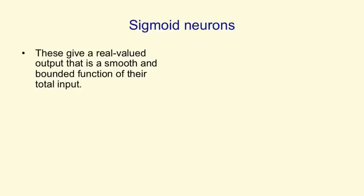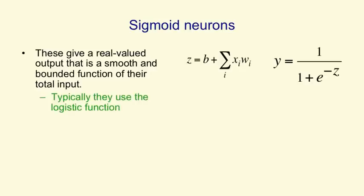The neurons that we'll use a lot in this course, and are probably the commonest kinds of neurons to use in artificial neural nets, are sigmoid neurons. They give a real-valued output that is a smooth and bounded function of their total input. It's typical to use the logistic function, where the total input is computed as before, so bias plus what comes in on the input lines weighted.